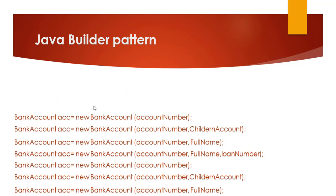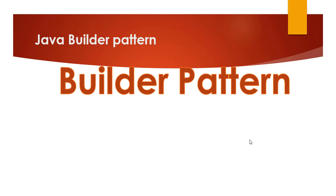Another approach is to create many different constructor signatures — one with account number only, another with account number and children count, another with just a name, and so on. This is also not good practice. Let's start building this bank account with the Builder pattern. We have a checklist we need to follow to implement the Builder pattern.